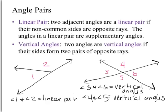Vertical angles: two angles are vertical angles if their sides form two pairs of opposite rays. Let's look at 3 and 6. Here's 3, here's 6. They are vertical angles because their sides — here's a side of 3, here's a side of 6 — it's an opposite ray. A side of 3, a side of 6 — it's an opposite ray.